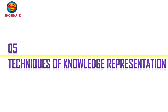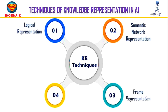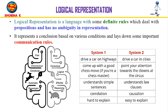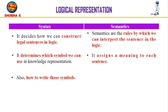Now let's move on to the techniques of knowledge representation in AI. There are four techniques: logical representation, semantic network representation, frame representation, and production rules. Logical representation is a language with definite rules that deals with propositions and has no ambiguity. It represents conclusions based on various conditions. It consists of precisely defined syntax and semantics which support sound inference. Syntax decides how to construct legal sentences in logic and which symbols to use, while semantics are the rules by which we interpret sentences and assign meaning.